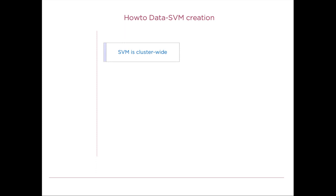Next to the name for a storage virtual machine you will also need a root volume, and this root volume is one gigabyte in size by default, and it's configured in an aggregate by choice. This volume is used to create a path to data volumes in the SVM for NAS clients. Without a root volume, NAS clients would not have a path to the data volumes in the storage virtual machine.